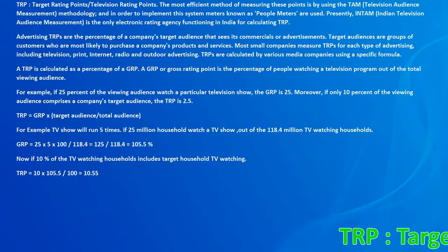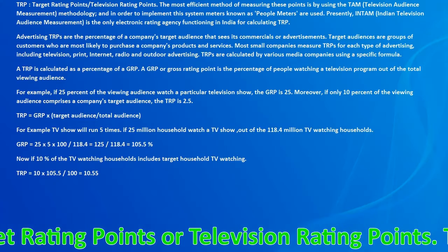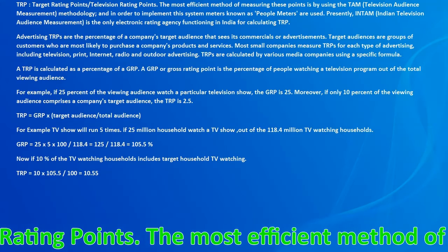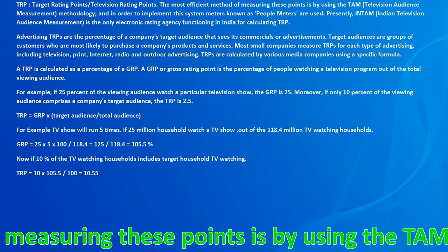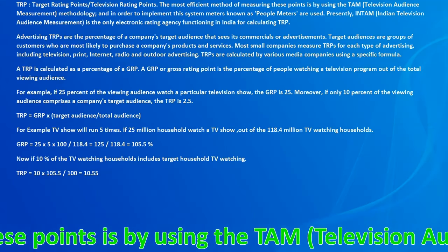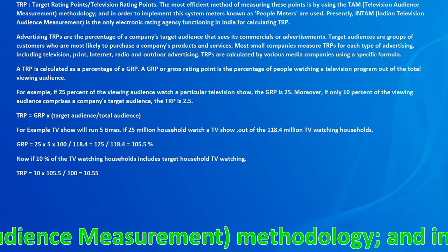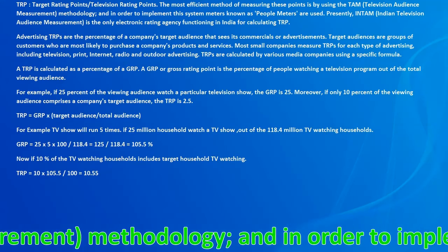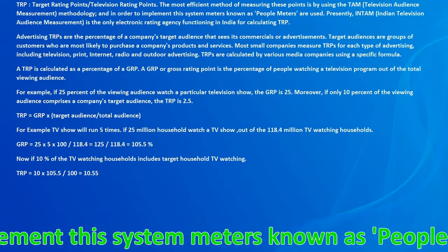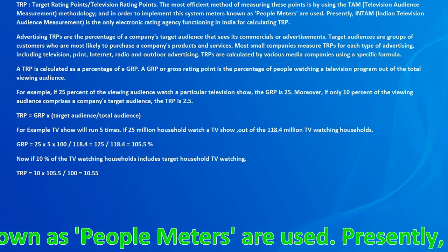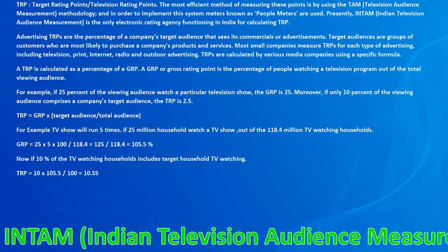TRP stands for Target Rating Points or Television Rating Points. The most efficient method of measuring these points is by using the TAM — Television Audience Measurement — methodology, and in order to implement this system, meters known as people meters are used. Presently, INEAM (Indian Television Audience Measurement) is the only electronic rating agency functioning in India for calculating TRP.